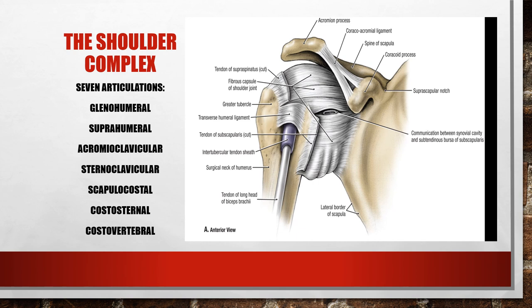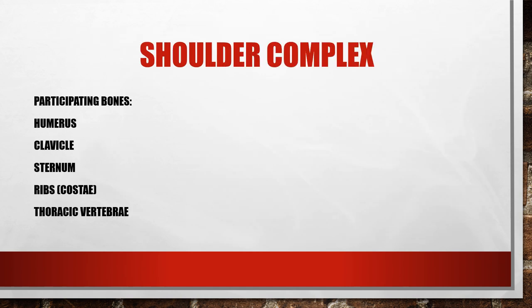You also have to stabilize that moving scapula when moving the humerus in different directions. The ribs are involved, so we have the costal-sternal joints (where ribs articulate with the sternum) and the costal-vertebral joints (where ribs articulate with the vertebrae). The shoulder complex has five participating general bones: the humerus, clavicle, sternum, 12 ribs, and 12 thoracic vertebrae.